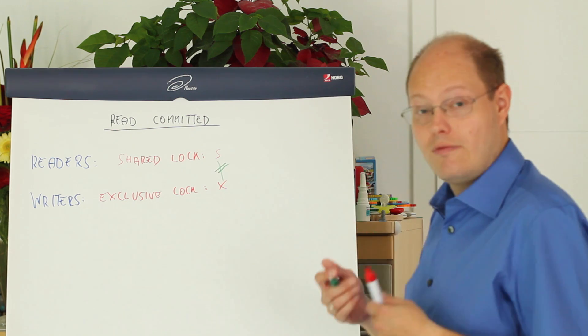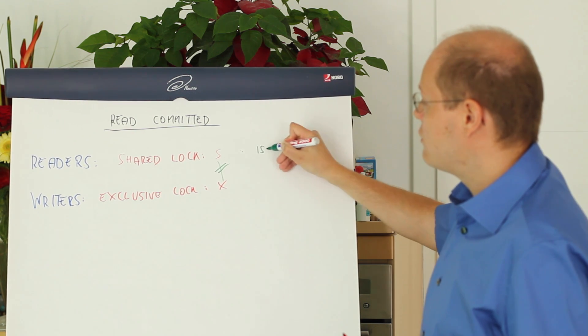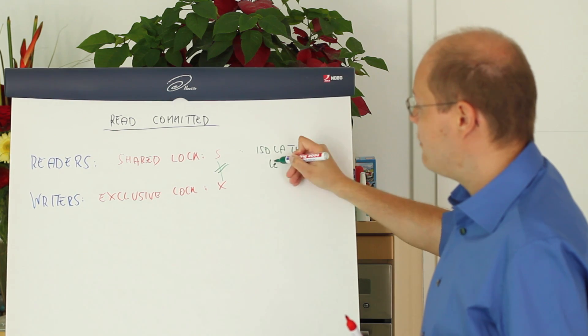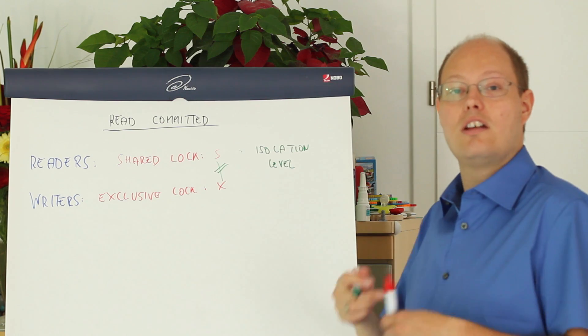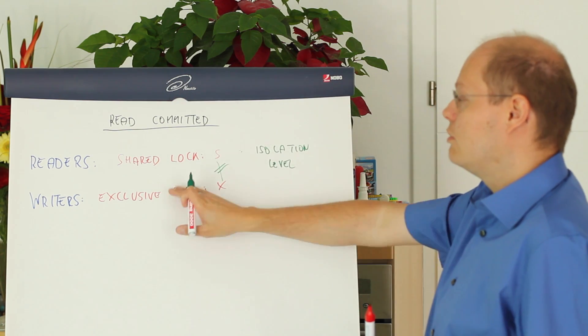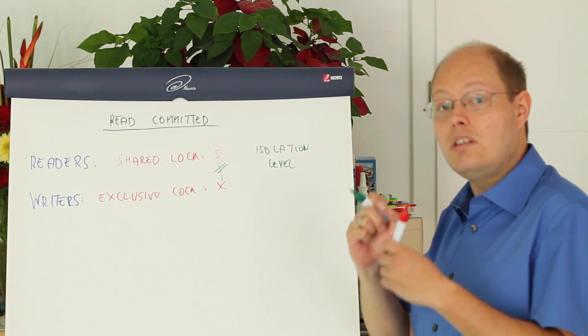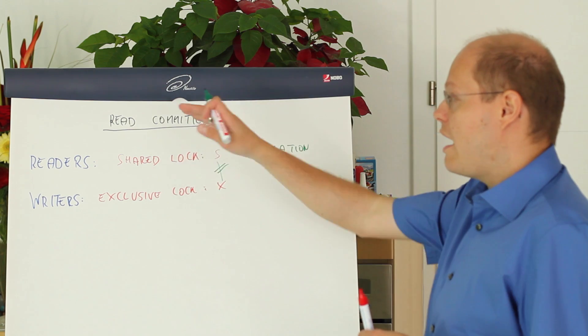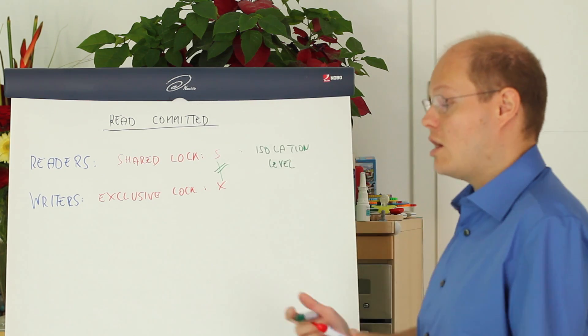And when we now work with the various isolation levels in SQL Server we just specify with the chosen isolation level how long readers are holding their shared locks. We have no control, no influence over the writers. We can only control with the isolation level how long a reader, a select statement, is holding its shared locks.